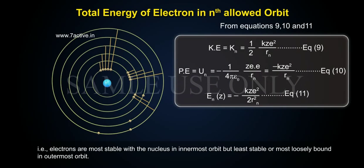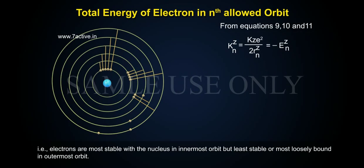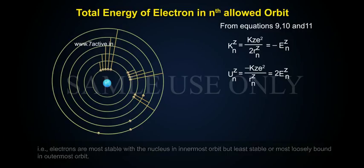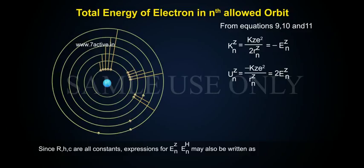From equation 9, 10 and 11: KNZ equals to KZE square by 2RNZ equals to minus ENZ. UNZ equals to minus KZE square by RNZ equals to 2ENZ. Since RHC are all constants, expressions for EN power Z, EN power H may also be written as